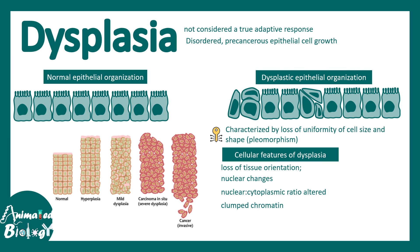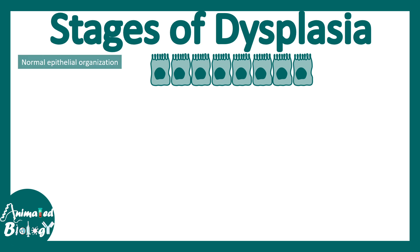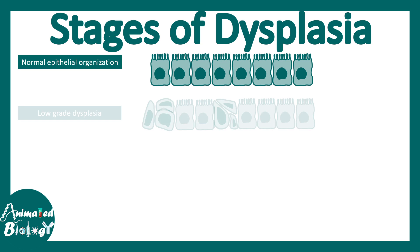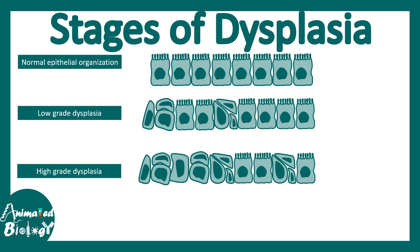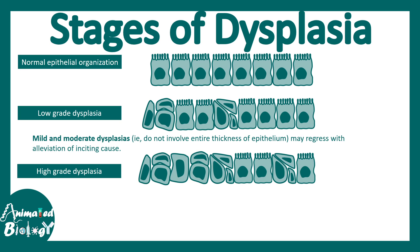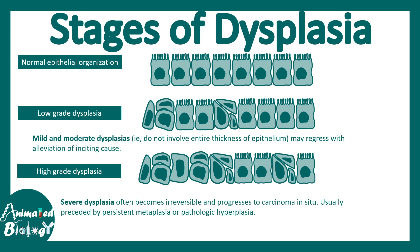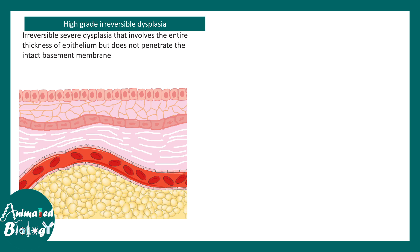This kind of dysplasia is the starting point of many cancers. Dysplasia has different grades — there could be low grade or high grade. In low grade dysplasia, it does not involve thickening of the epithelium and can be reversible when the stressor is alleviated. But in severe dysplasia, it is irreversible and most likely would turn into cancer.